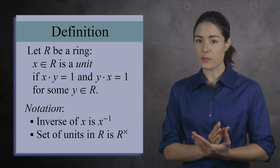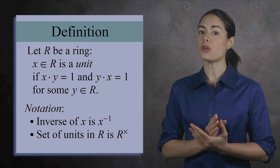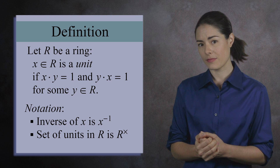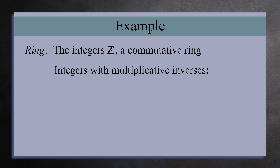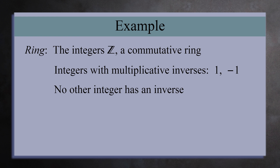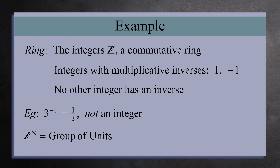Let's first see a few examples before we talk about the units abstractly. The integers Z are a commutative ring. The only numbers with a multiplicative inverse are 1 and negative 1. For every other non-zero integer, the inverse would be a fraction, not an integer. For example, the inverse of 3 is 1 third, which is not an integer. So the units for this ring is a group with only two elements: 1 and negative 1.